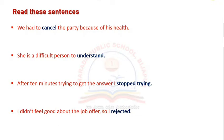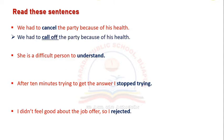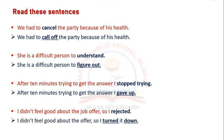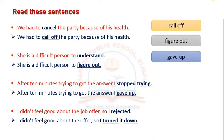Now, can we try to replace these highlighted words with some phrases without changing the meaning of the sentences? Here we go. We had to call off the party because of his health. She is a difficult person to figure out. After 10 minutes trying to get the answer, I gave up. I didn't feel good about the offer, so I turned it down. In these sentences, the words call off, figure out, gave up, turned down are phrasal verbs.